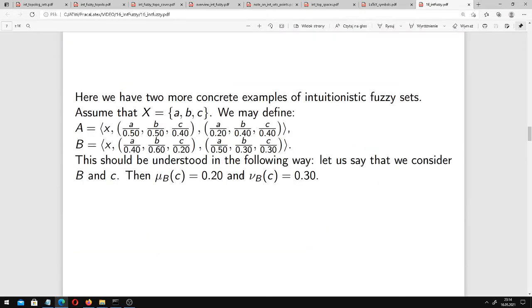Here we have two more concrete examples of intuitionistic fuzzy sets. Assume that we have a finite universe which consists of three elements a, b, c, and we may define these two sets A and B. Here we have membership functions, and here we have non-membership functions and their values for a, b, and c. These expressions are not fractions; this is just a kind of notation. This should be understood in the following way.